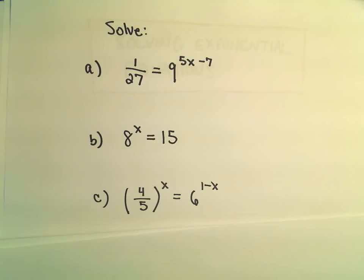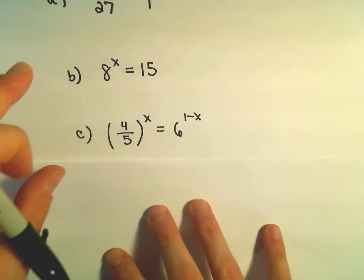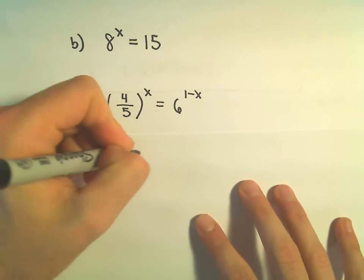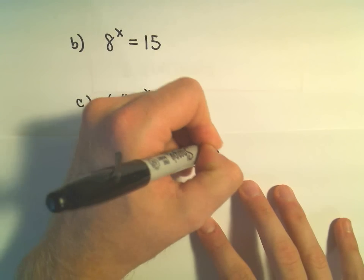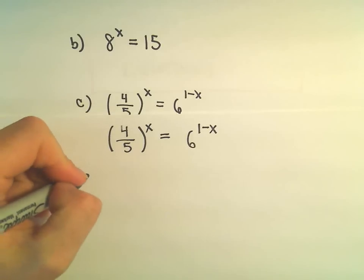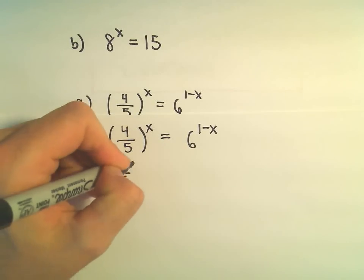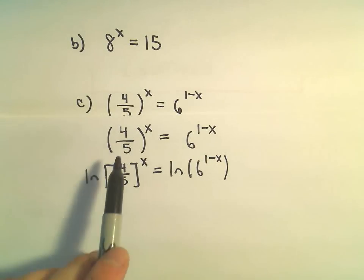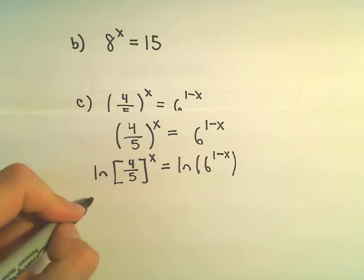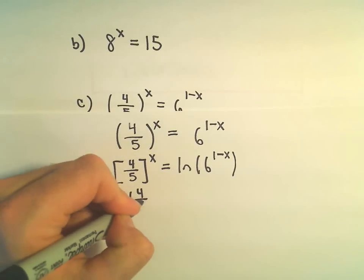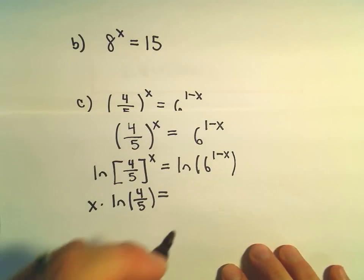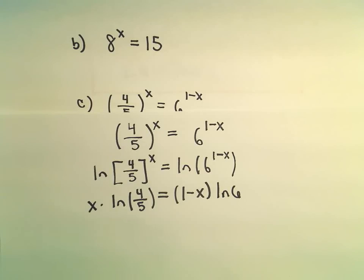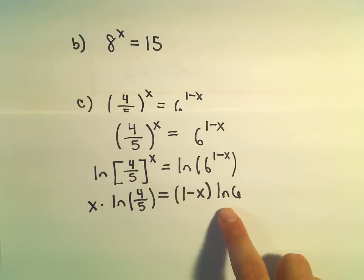One more example: we've got (4/5)^x equals 6^(1 minus x). Exact same idea — I see variables as exponents, and the way I'm going to get those away from being exponents is by throwing logarithms onto both sides. You can use any type of logarithm, but you obviously have to use the same one on each side. I'm going to use the natural logarithm again. So we have ln of (4/5)^x equals ln of 6^(1 minus x). The x comes out front on the left side giving x times ln(4/5), and on the right side, 1 minus x comes out front giving (1 minus x) times ln(6). This is now just a linear equation — don't be thrown off by the logarithm, it's just a number.